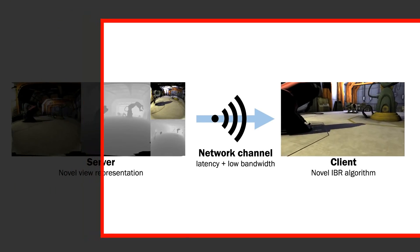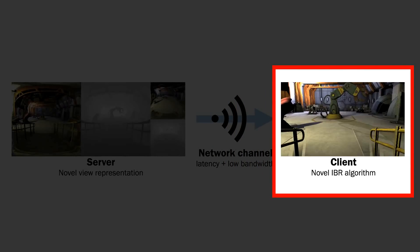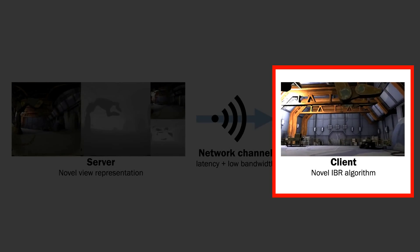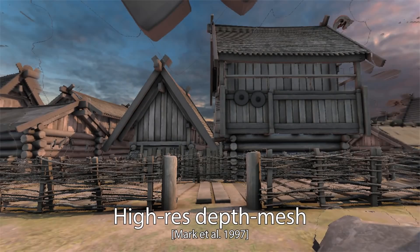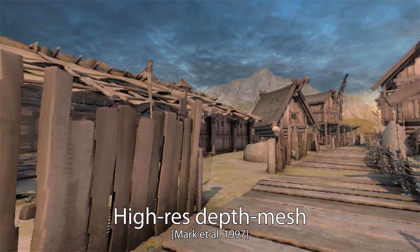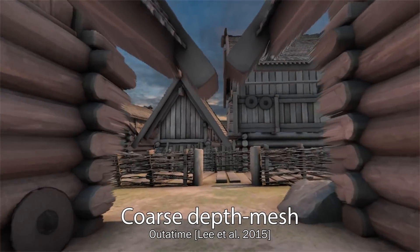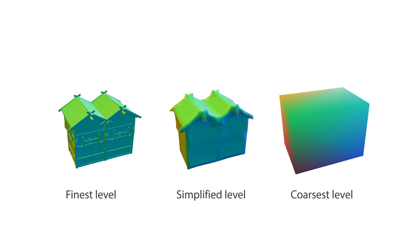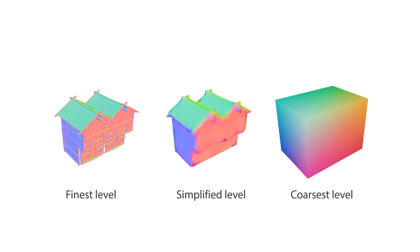At the client, the view representation arrives via video stream with a delay and at a lower-than-target frame rate. It uses IBR to synthesize novel views from its current pose at a high frame rate. Most previous IBR methods require too many primitives to represent detailed geometry at high fidelity, which performs poorly on low-powered mobile GPUs. Our method uses a level-of-detail proxy that is dramatically simplified and fast, yet has reasonably accurate geometric detail.